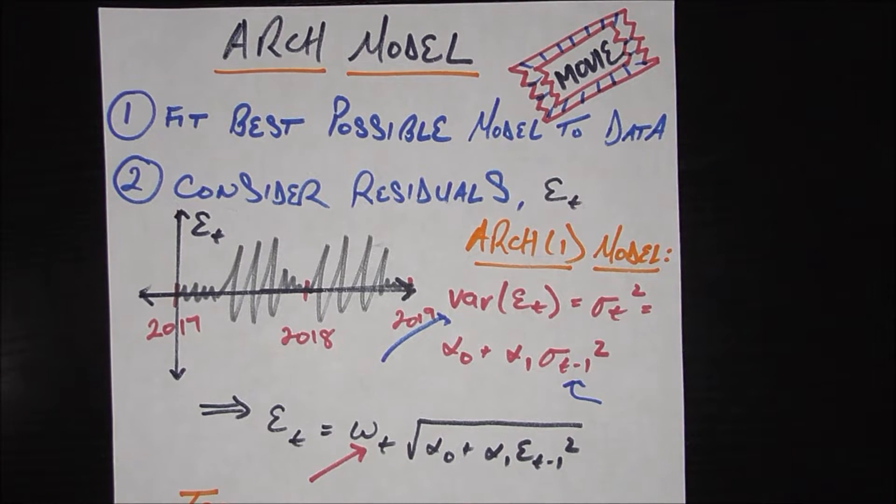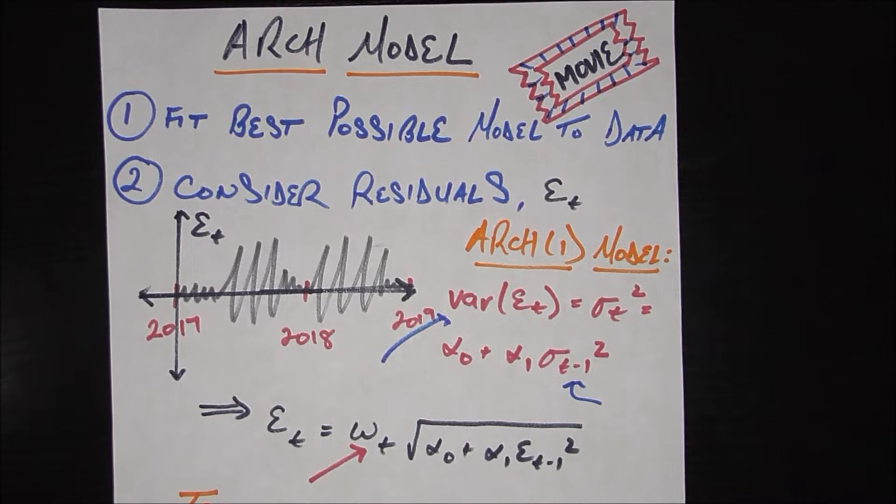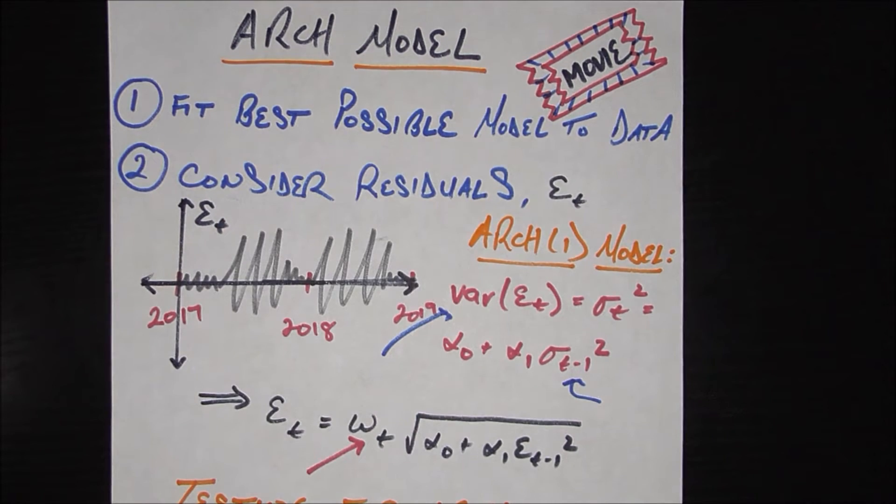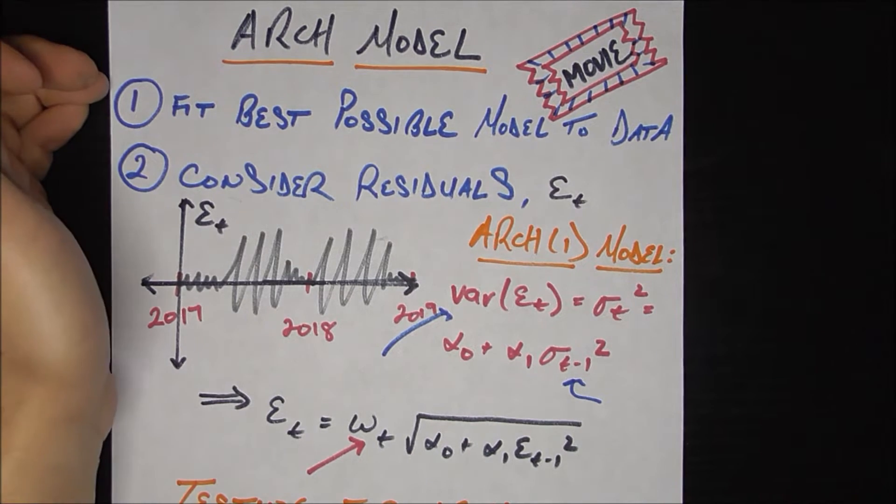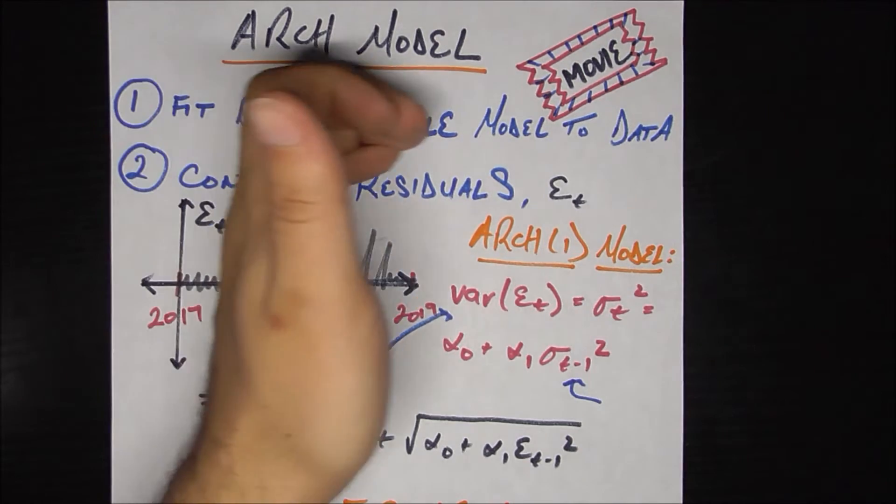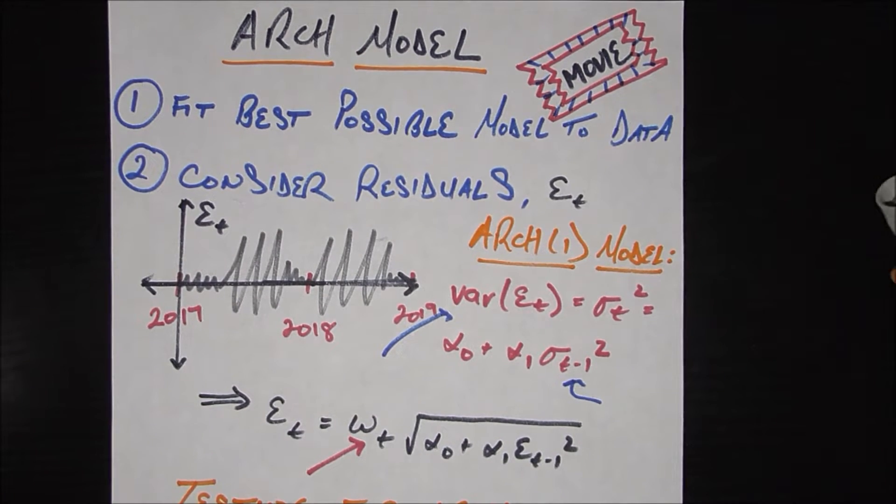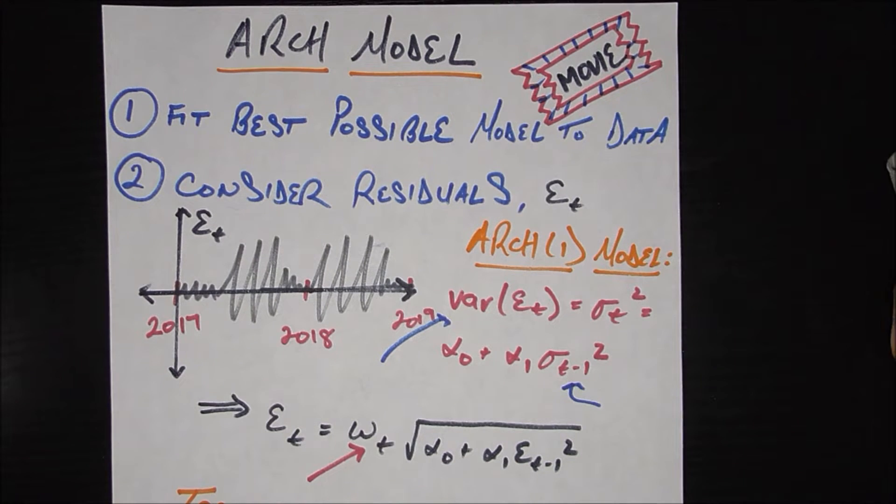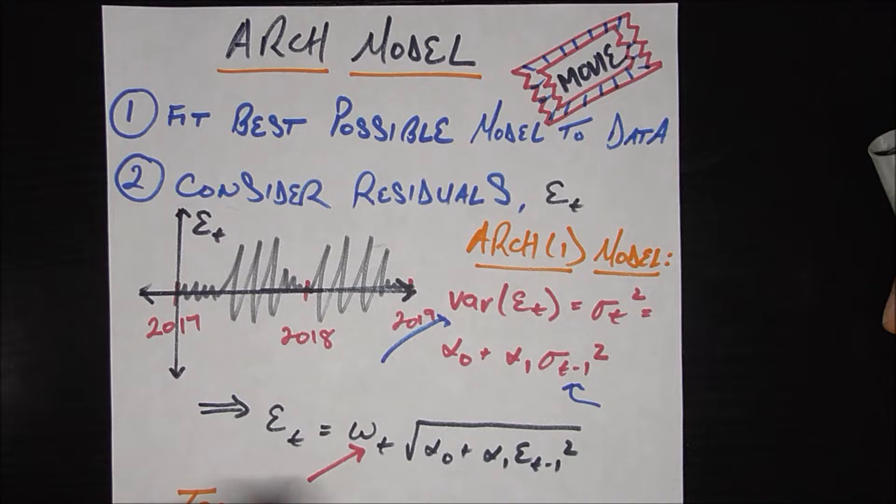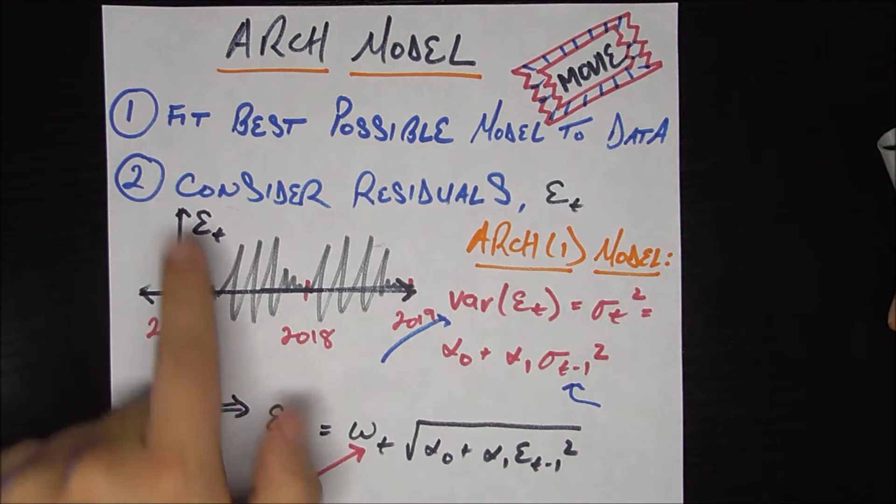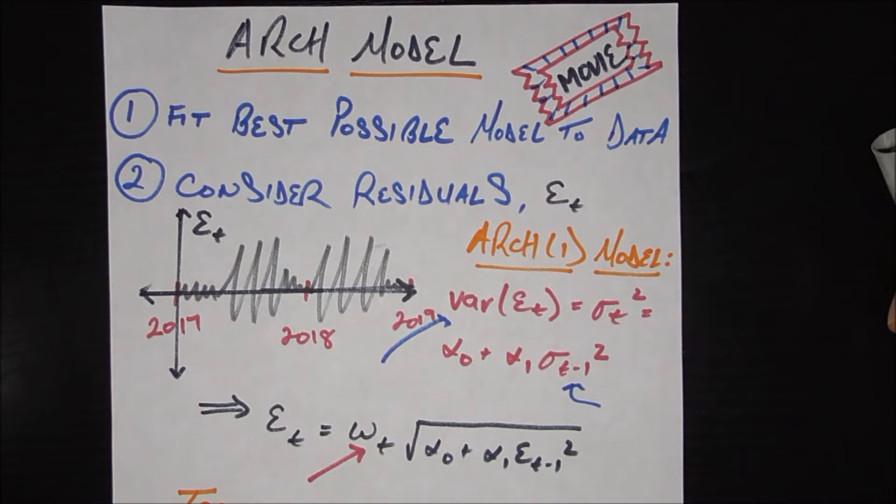So again, we're going to set up a quick scenario so this seems a little bit more relatable. Let's say you run a movie theater and you're trying to model the number of tickets you're selling every week throughout the year. So let's say as your first step, you fit the best possible model to your data, whether that's autoregressive or moving average or whatever you want to do. Now let's say you fit the best possible model you can for now and then you go ahead and plot your residuals or your errors each week.